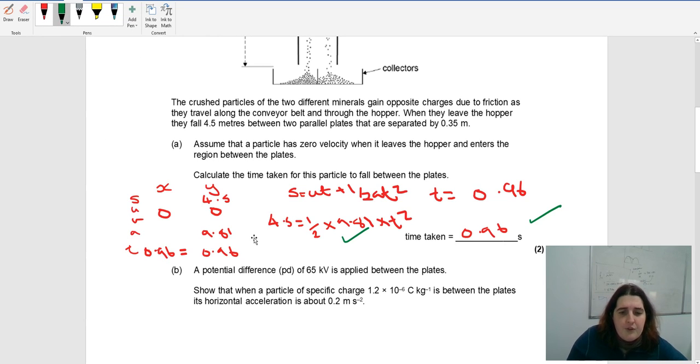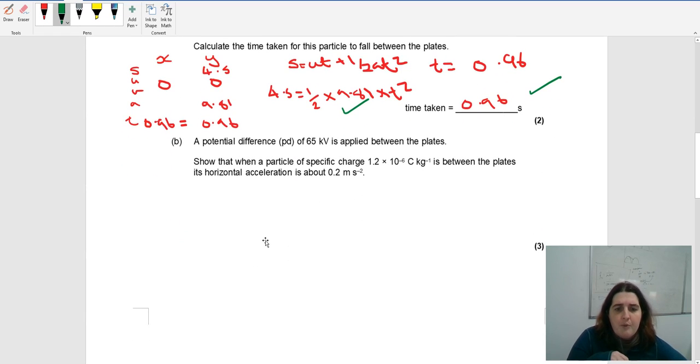A potential difference of 65 kilovolts is applied between the two plates. Show that when a particle has specific charge 1.2 times 10 to the minus 6, the horizontal acceleration is about 0.2. When they say specific charge, I write it down. Specific charge is the charge over the mass. I normally write the formula down because it will help later.